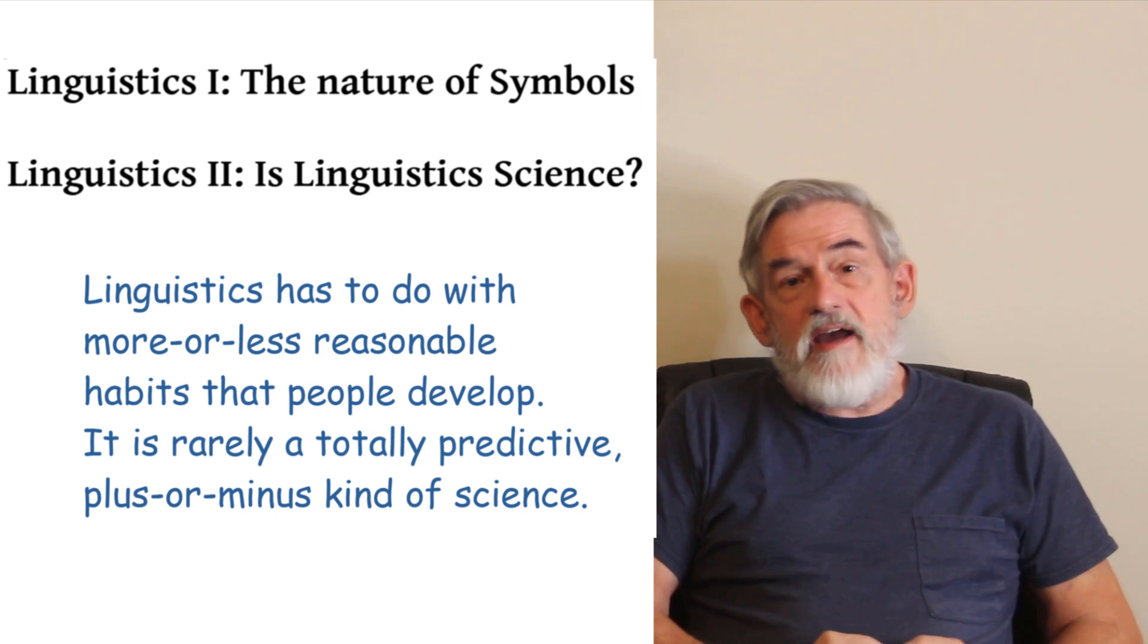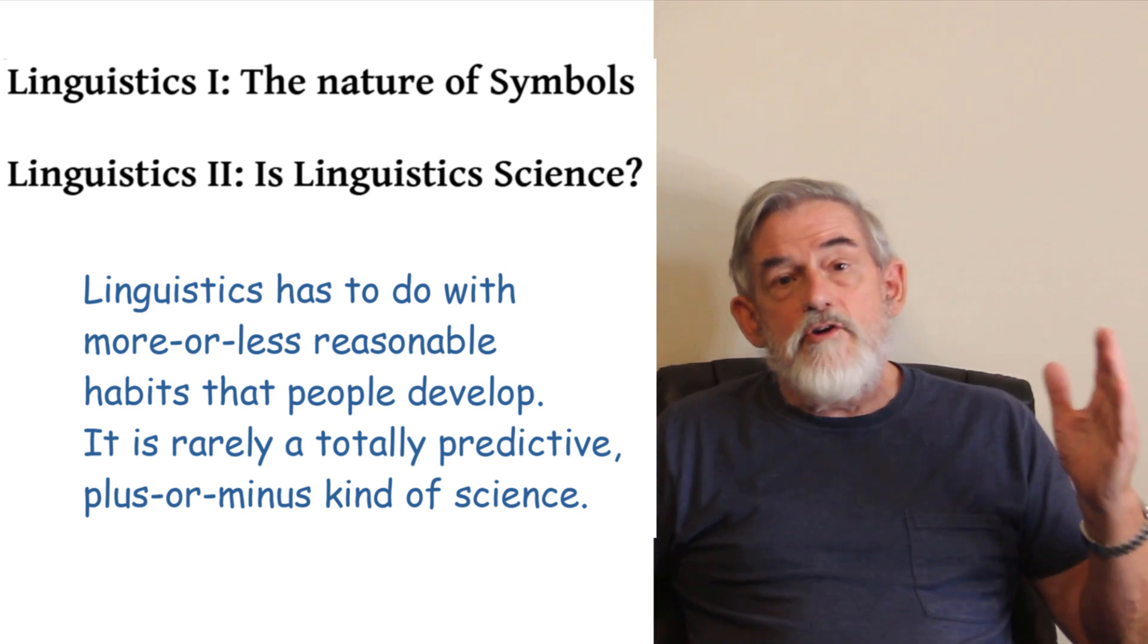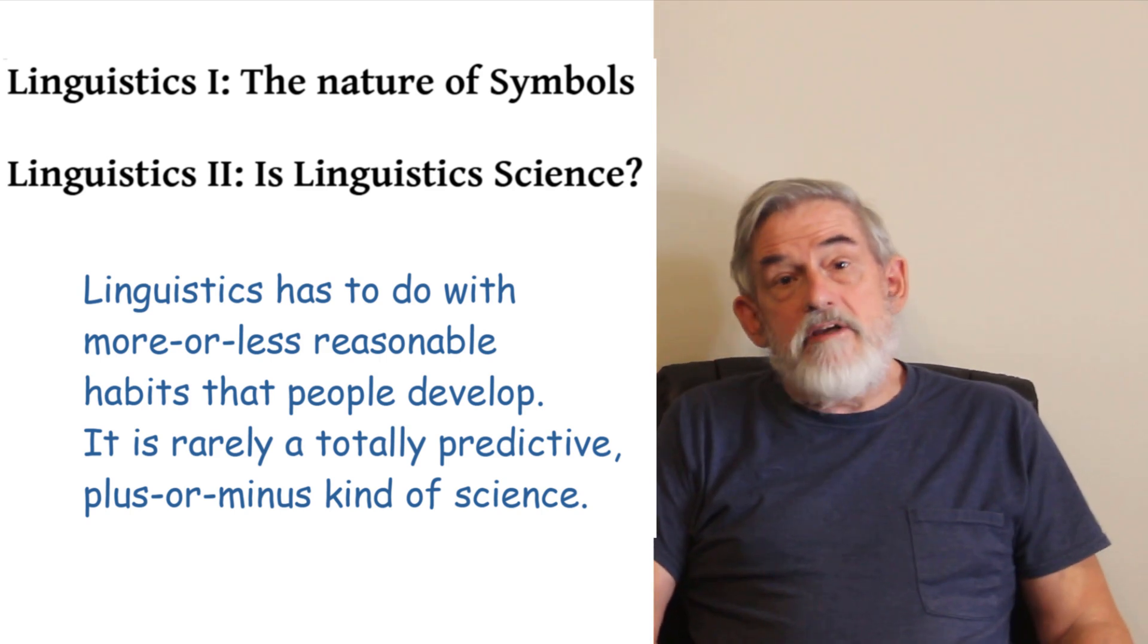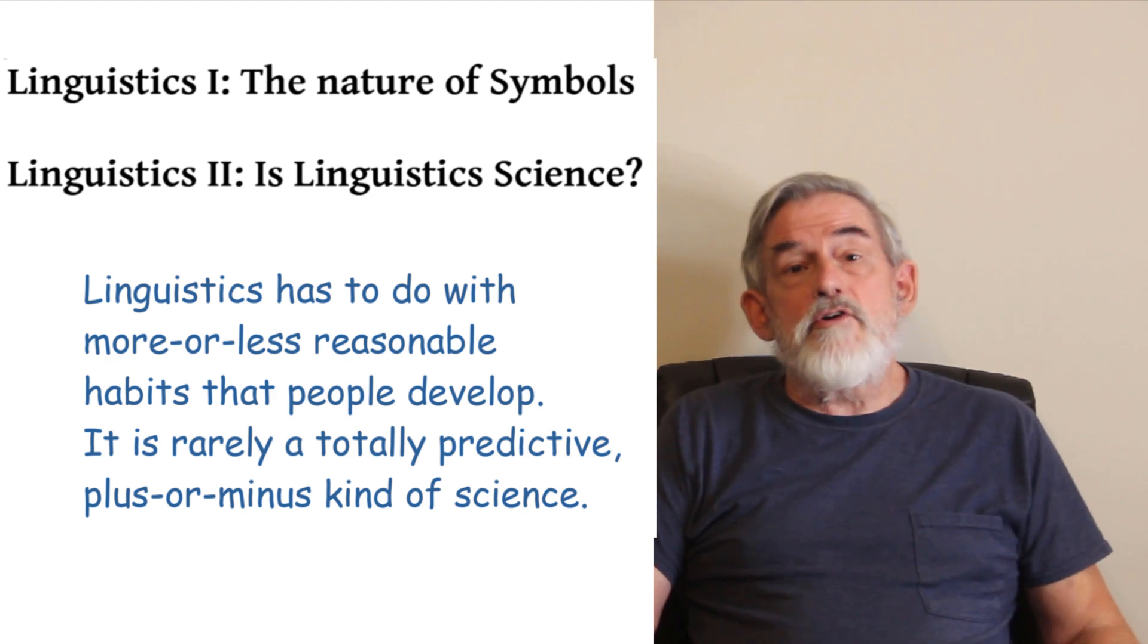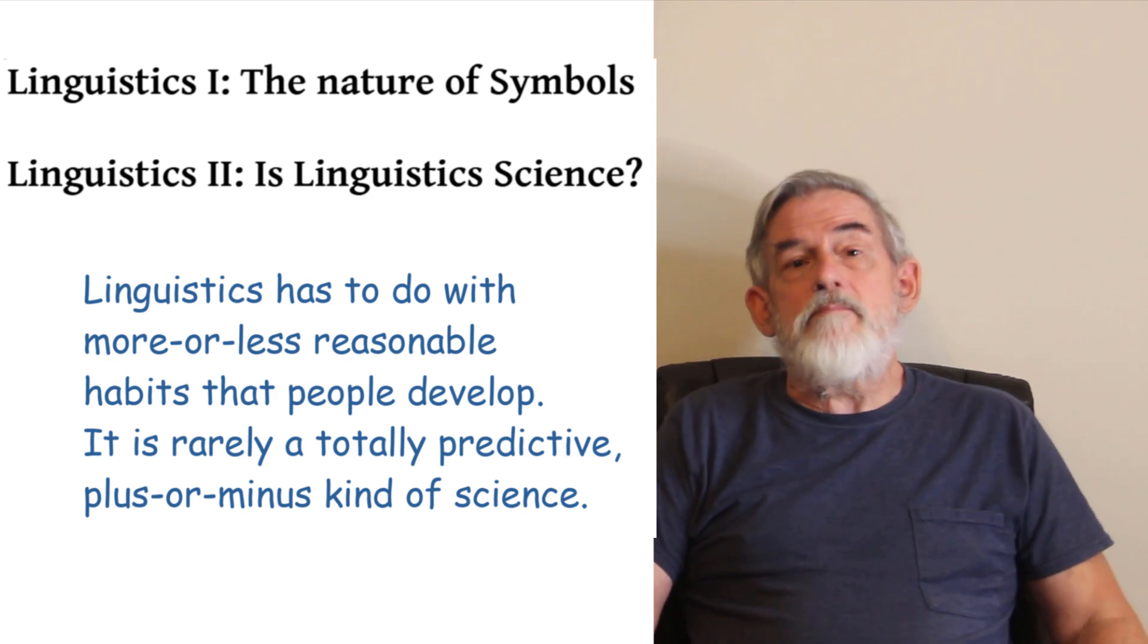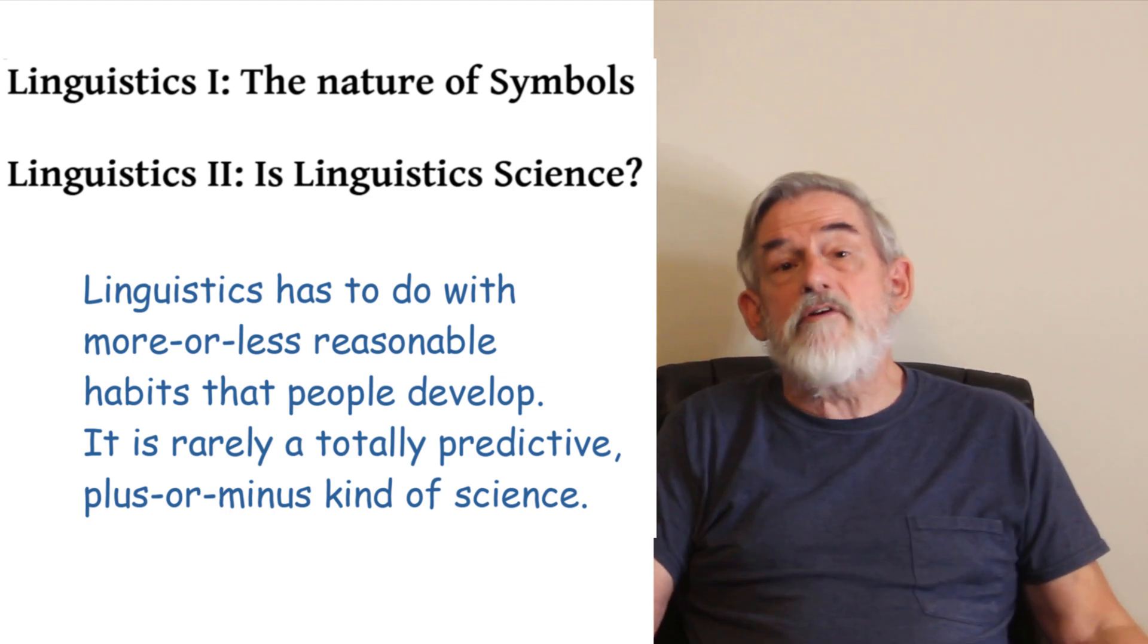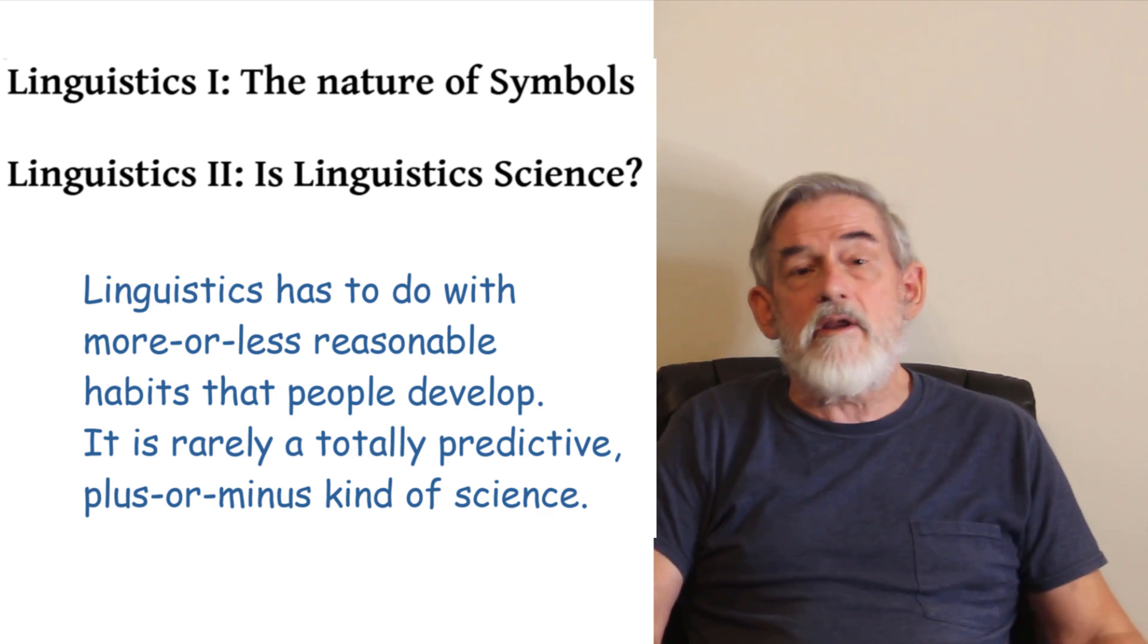There is not a dichotomy between things that are predictable and things that are arbitrary. There is a whole range of structures in human cognition and in human language that is reasonable or is understandable to some extent without being predictable. You can be less surprised that people would do B and more surprised that they would do A without saying either that A is absolutely necessary or that B is totally arbitrary.